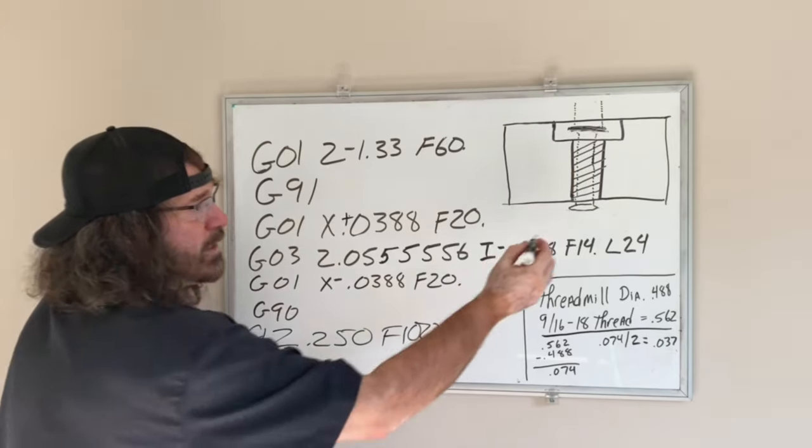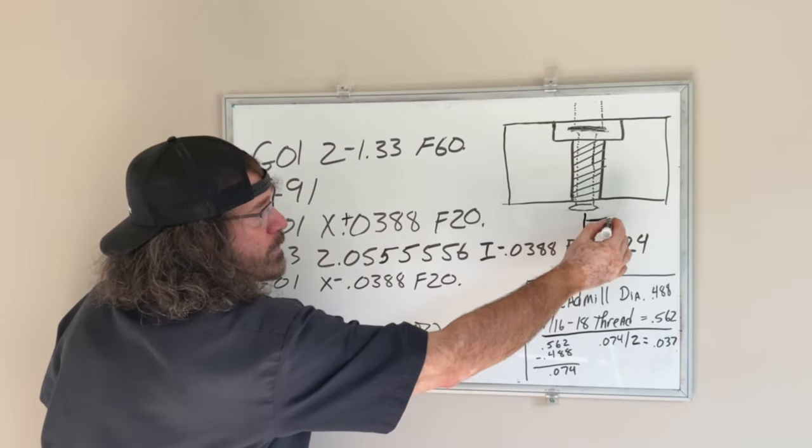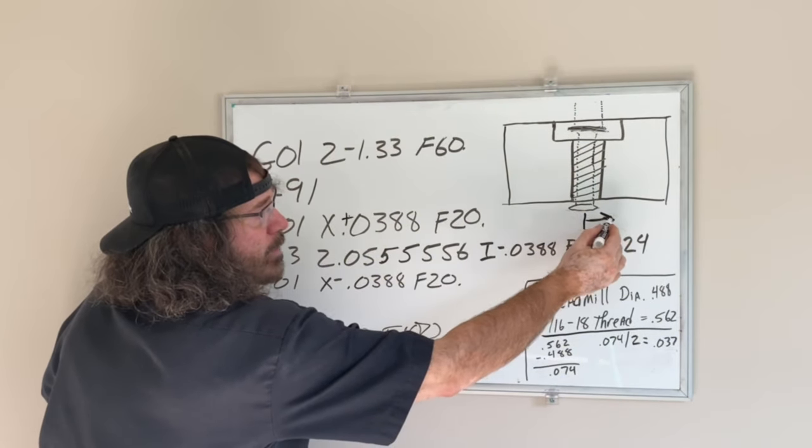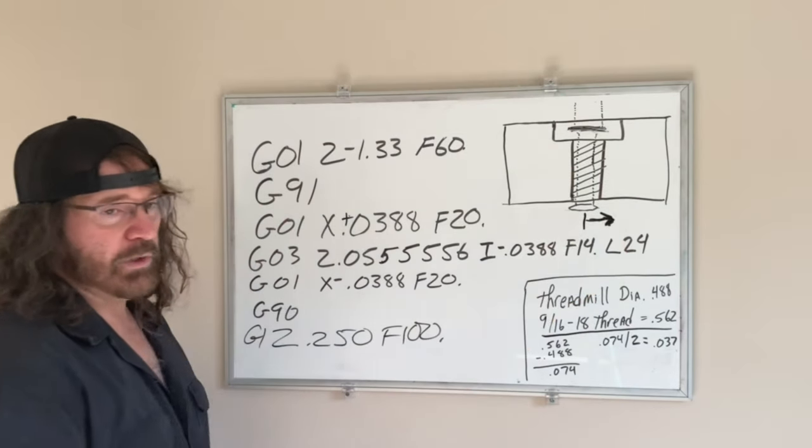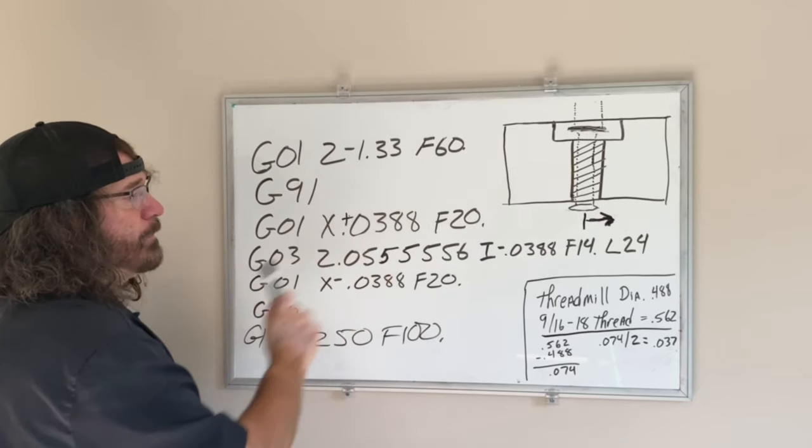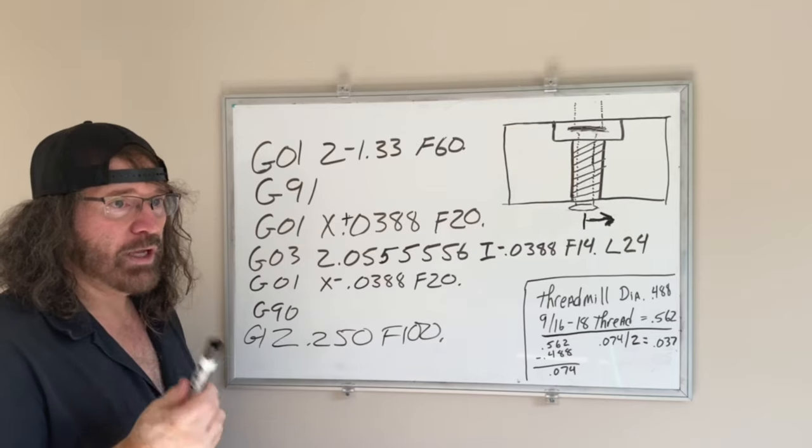From there I'm going to move over X positive 0.0388. So from centerline, which is right here, we're going to move over. You get the point.